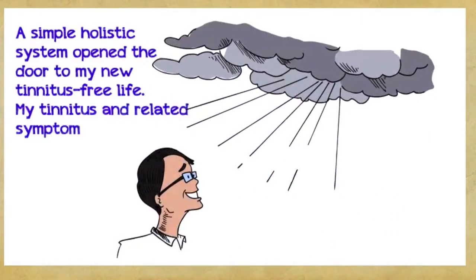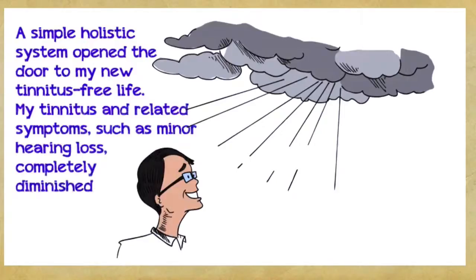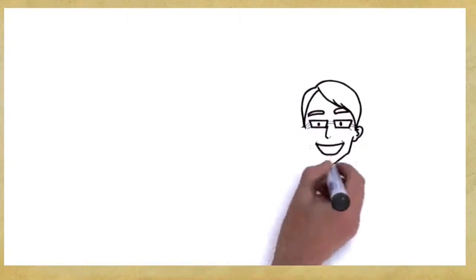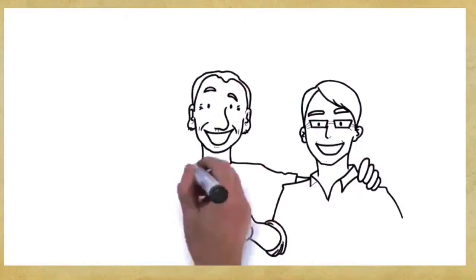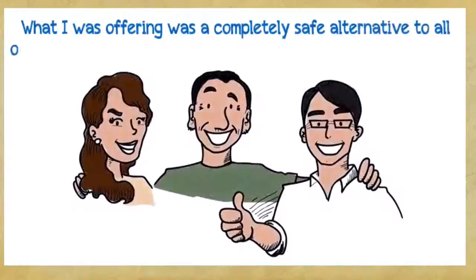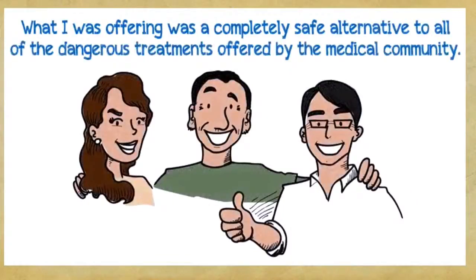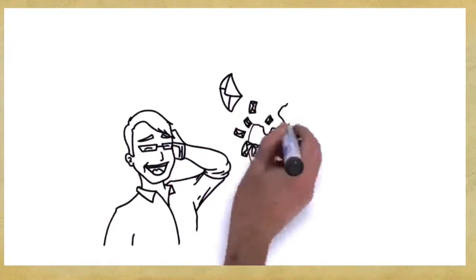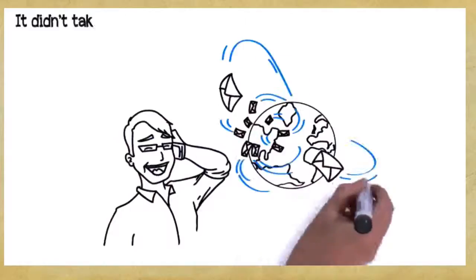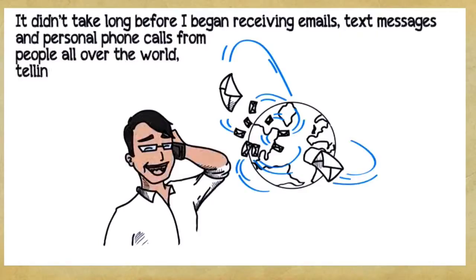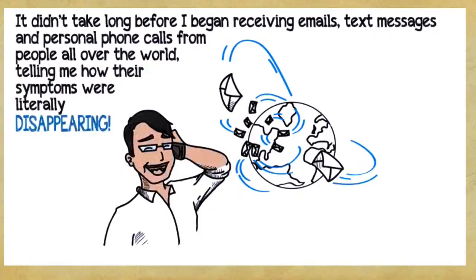After countless rounds of trial and error, useless treatments, disappointments, and agony, a simple holistic system opened the door to my new tinnitus-free life. My tinnitus and related symptoms such as minor hearing loss completely diminished. After years of suffering, I was finally free from tinnitus. Since I'd been on multiple blogs and various tinnitus groups for years, it wasn't difficult to find other people willing to give my treatment a try. What I was offering was completely a safe alternative to all of the dangerous treatments offered by the medical community. I sent off my five-step protocol to several dozen tinnitus sufferers and waited for them to tell me how it worked. It didn't take long before I began receiving emails, text messages, and personal phone calls from people all over the world telling me how their symptoms were literally disappearing.